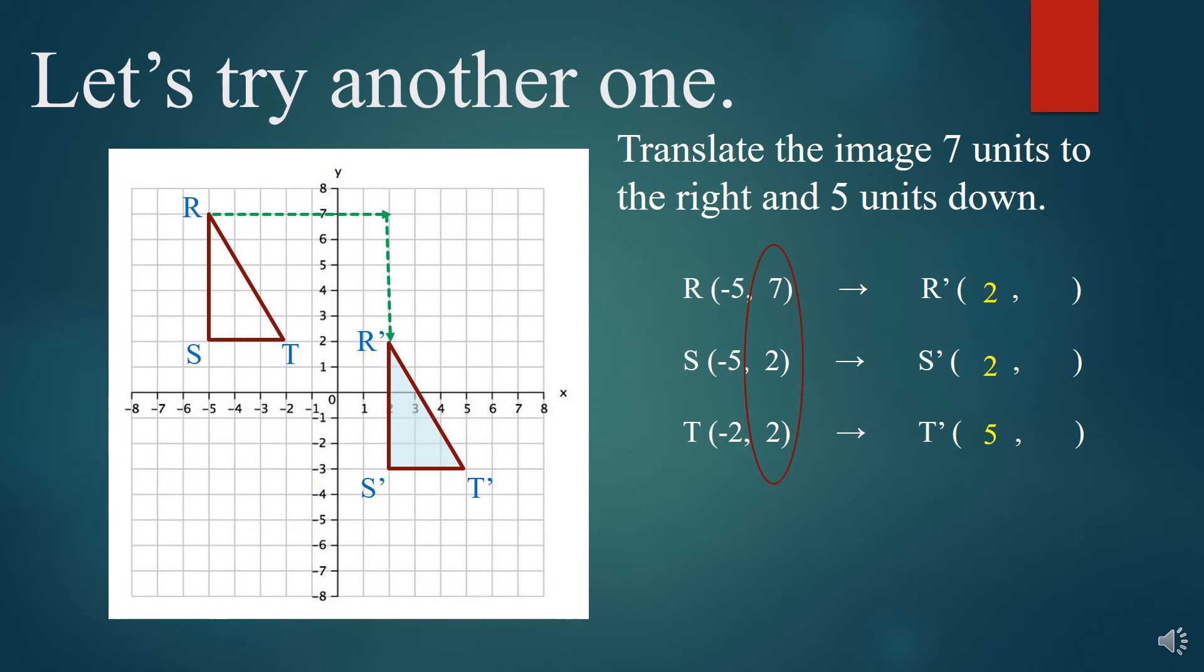Now we are going to focus on the Y's. We are moving 5 units down, so we are going to be subtracting 5 from each of those values. 7 minus 5 is 2, 2 minus 5 is negative 3, and again 2 minus 5 is negative 3, and there you go. Those are your new points and their coordinates.